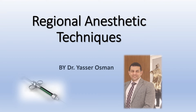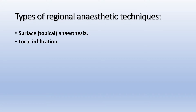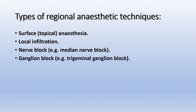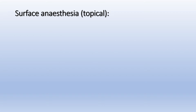I am Dr. Yasser Osman and I'm going to talk about regional anesthetic techniques. Types of regional anesthetic techniques include: surface or topical anesthesia, local infiltration, nerve block (for example, median nerve block), ganglion block (for example, trigeminal ganglion block), plexus block (for example, brachial plexus block), central neural block such as spinal or epidural, and local intravenous anesthesia.